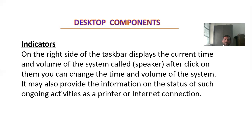The right side of the taskbar shows the current time and volume of the system's speaker. After you click on them, you can change the time and volume of the system. You can set properties, change, and update them, or create and remove options. The status of the printer is also shown on the right side, and you can see the internet connection indicator on the right side of the taskbar.